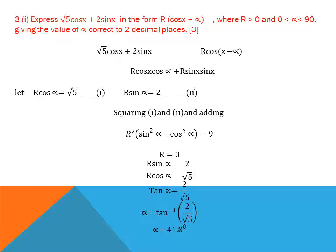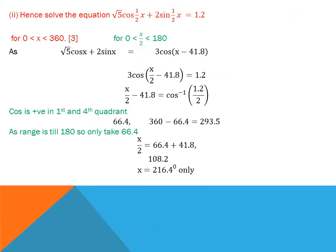Dividing equation 2 by equation 1: tan α = 2/√5, so α = tan⁻¹(2/√5) = 41.8°. For part two, solve √5·cos(½x) + 2·sin(½x) = ½. He has replaced X with ½x, so the angle is halved. If the limit for X is 0 to 360, we divide by 2 to get the range for X/2 as 0 to 180.